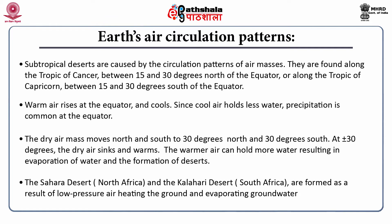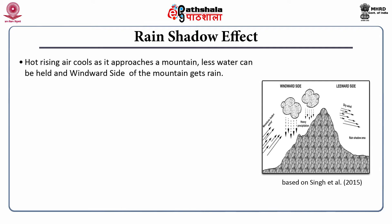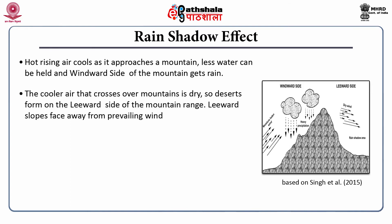The Sahara desert in North Africa and the Kalahari desert in South Africa are formed as a result of low pressure air heating the ground and evaporating ground water. The second factor is the rain shadow effect. Hot rising air cools as it approaches a mountain; less water can be held and the windward side of the mountain gets rain. The cooler air that crosses the mountains is dry, so deserts form on the leeward side of the mountain range.